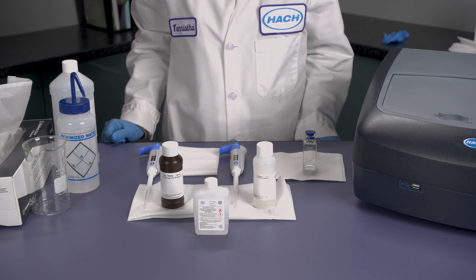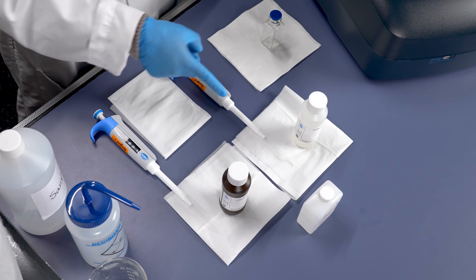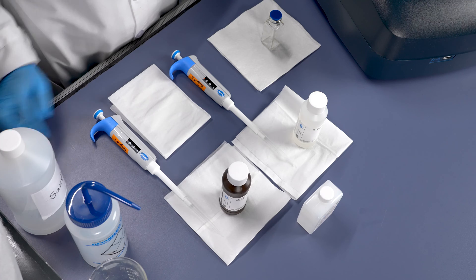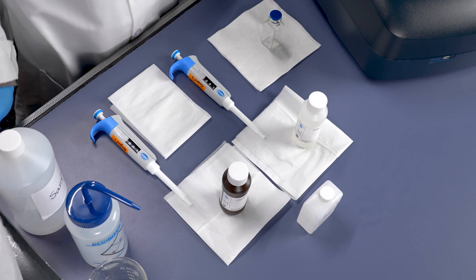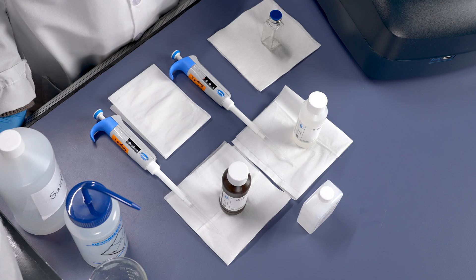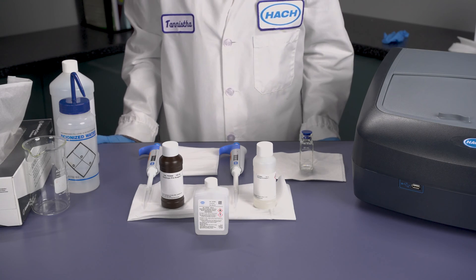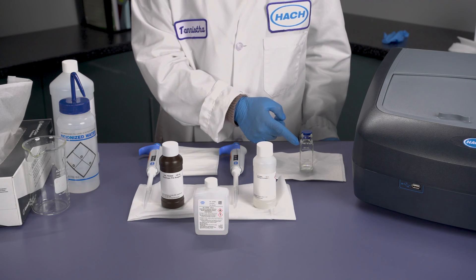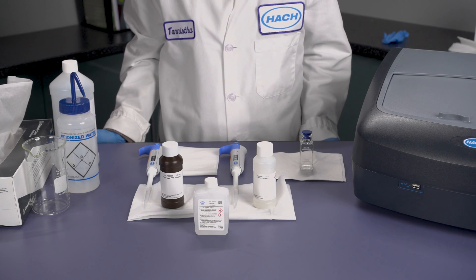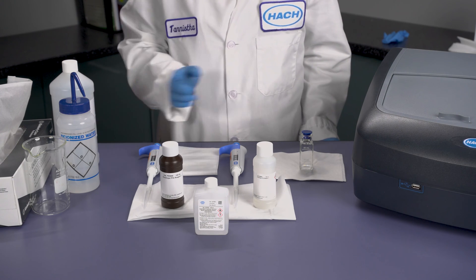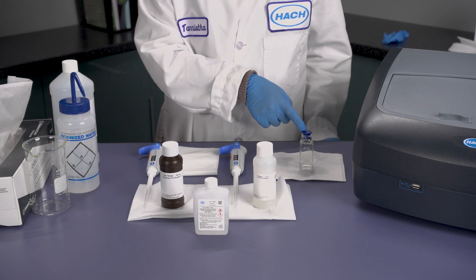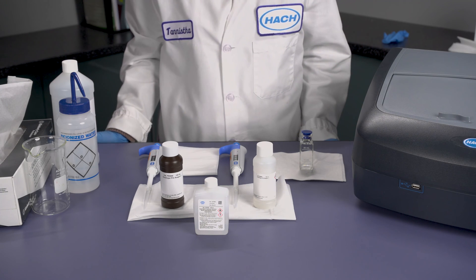For dispensing the reagents, you will need two separate pipetters, one for each reagent, as cross-contamination can be a significant issue. Also, after each method, you will replace the pipette tips. Never reuse the same pipette tip twice to prevent cross-contamination. Also important is a 25 ml sample cell. This sample cell is a typical Hach square sample cell with a mark at 25 ml for the sample. Also included is a rubber stopper. It's very important to use this rubber stopper with each test.